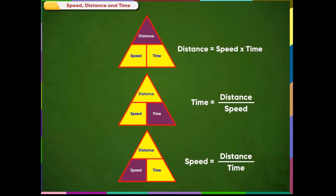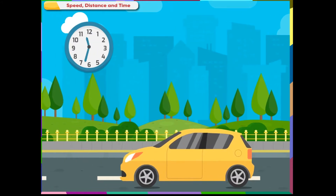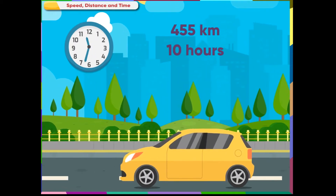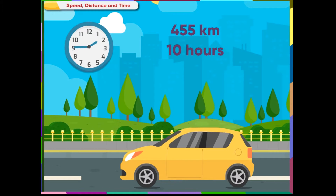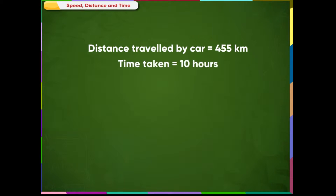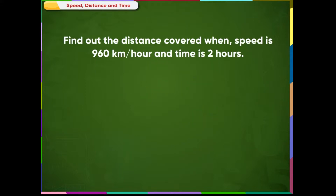Example 1: Nancy travelled a distance of 455 km by car in 10 hours. Find the speed of the car. Distance travelled by car = 455 km; Time taken = 10 hours. Since Speed equals distance divided by time: 455 divided by 10 equals 45.5 km per hour.